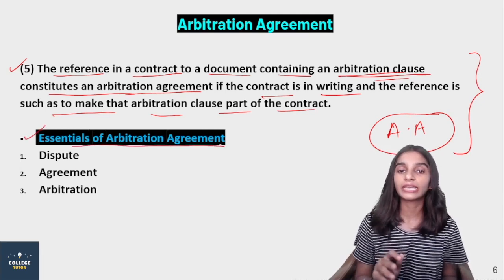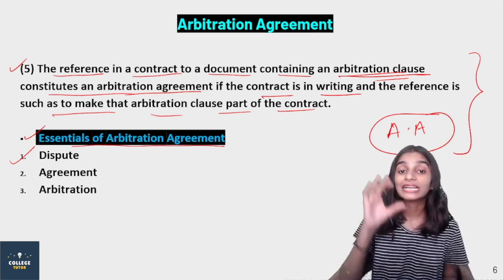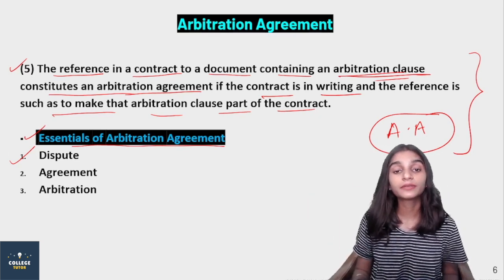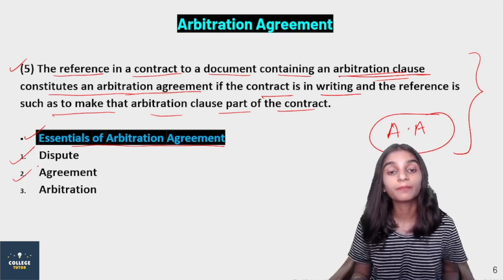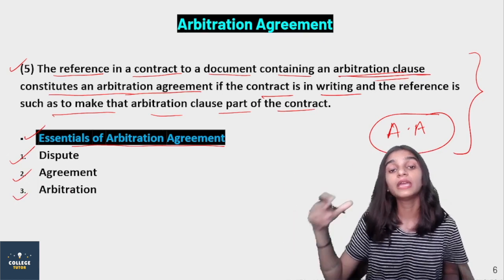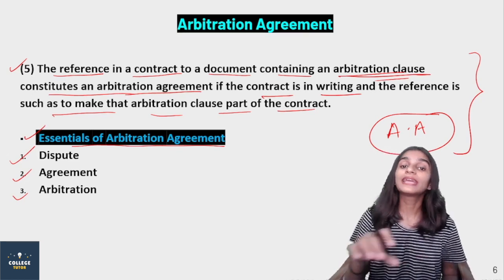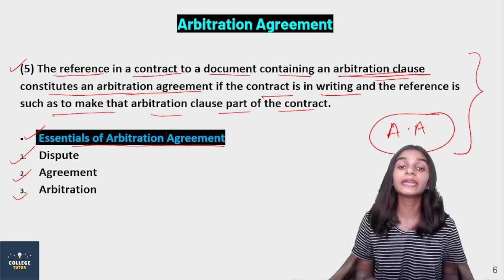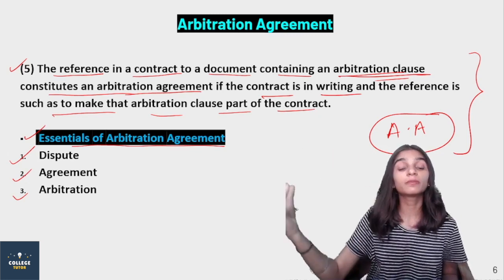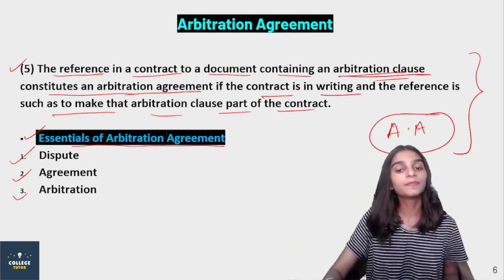Sub-clause 5 says: the reference in a contract to a document containing an arbitration clause constitutes an Arbitration Agreement if the contract is in writing and the reference is such as to make that arbitration clause a part of the contract. So this is our whole Arbitration Agreement under Section 7 — very important. There are five sub-clauses we should know about. The essentials of an Arbitration Agreement: when two parties come into a legal relationship and form an agreement or contract, and decide that if a dispute arises in the future, the parties will go to an arbitrator and resolve their disputes.